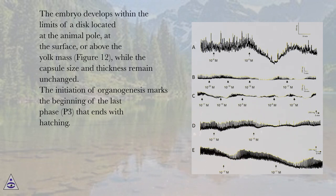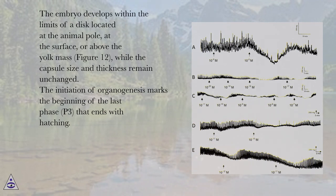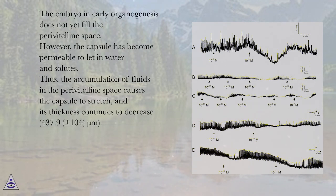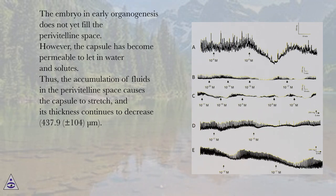The embryo develops within the limits of a disc located at the animal pole, at the surface or above the yolk mass, figure 12, while the capsule size and thickness remain unchanged. The initiation of organogenesis marks the beginning of the last phase, P3, that ends with hatching. The embryo in early organogenesis does not yet fill the paravitelline space; however, the capsule has become permeable to water and solutes. Thus, the accumulation of fluids in the paravitelline space causes the capsule to stretch, and its thickness continues to decrease to 437.9 ± 104 microns.